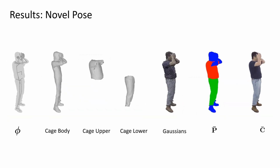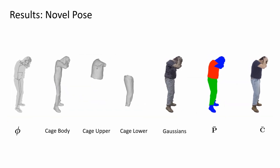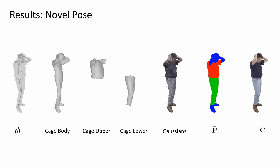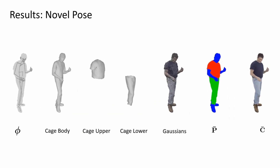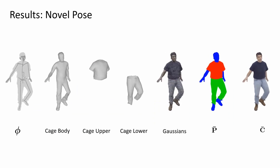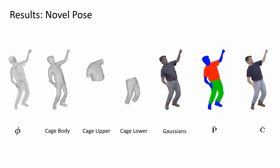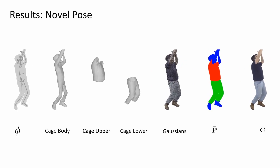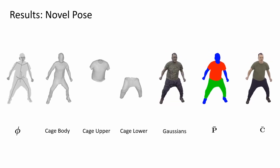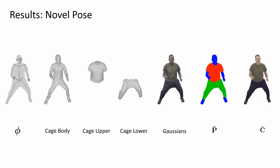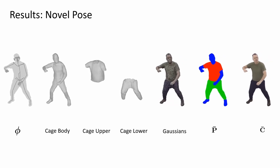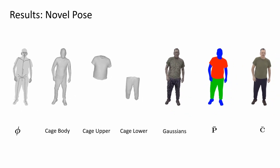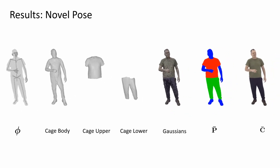Here you can see the complete output of our model. Each layer is modeled by a separate Gaussian network, driven by a motion vector. Modeling each garment layer as a specialized network allows us to capture loose clothing, like sweatpants.